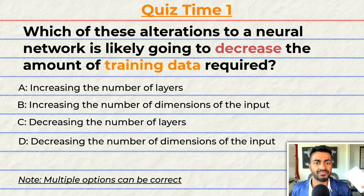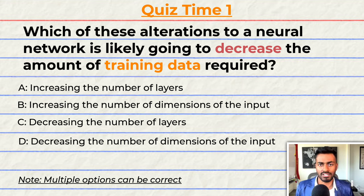Have you been paying attention? Let's quiz you to find out. Which of these alterations to a neural network is likely going to decrease the amount of training data required? A, increasing the number of layers. B, increasing the number of dimensions of the input. C, decreasing the number of layers. Or D, decreasing the dimensions of the input. Note that more than one option could be correct. So comment your answer down below and let's have a discussion.